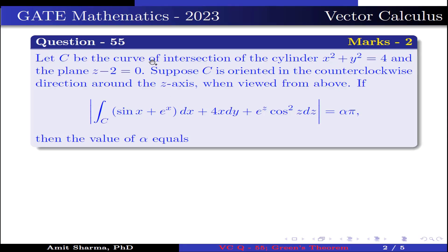Question is, let C be the curve of intersection of the cylinder x² + y² = 4 and the plane z - 2 = 0. Suppose C is oriented in counterclockwise direction around the z-axis when viewed from above. If |∫_C (sin x + e^x)dx + 4x dy + e^z cos² z dz| = απ, then the value of α equals.